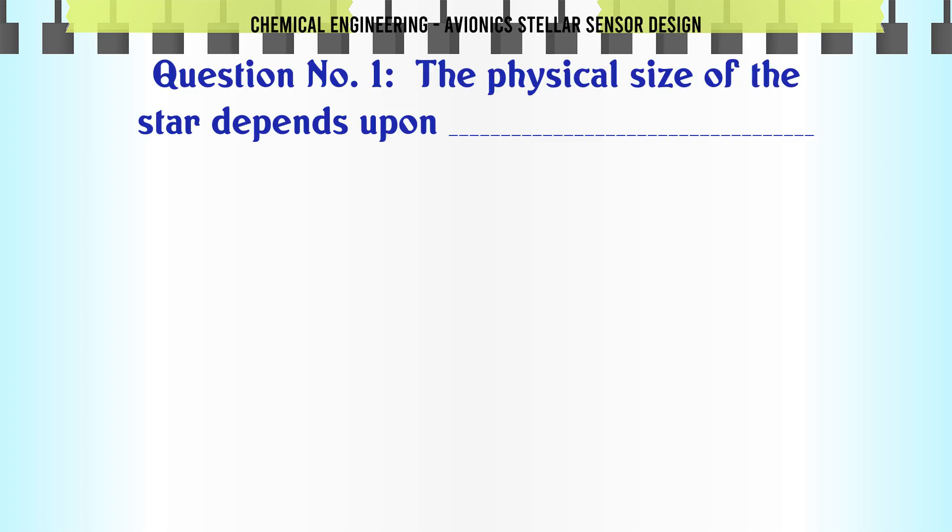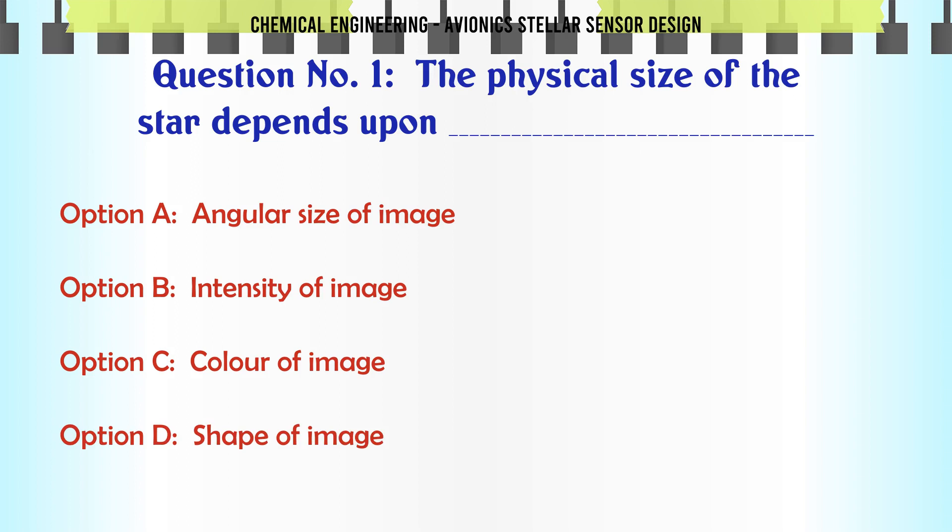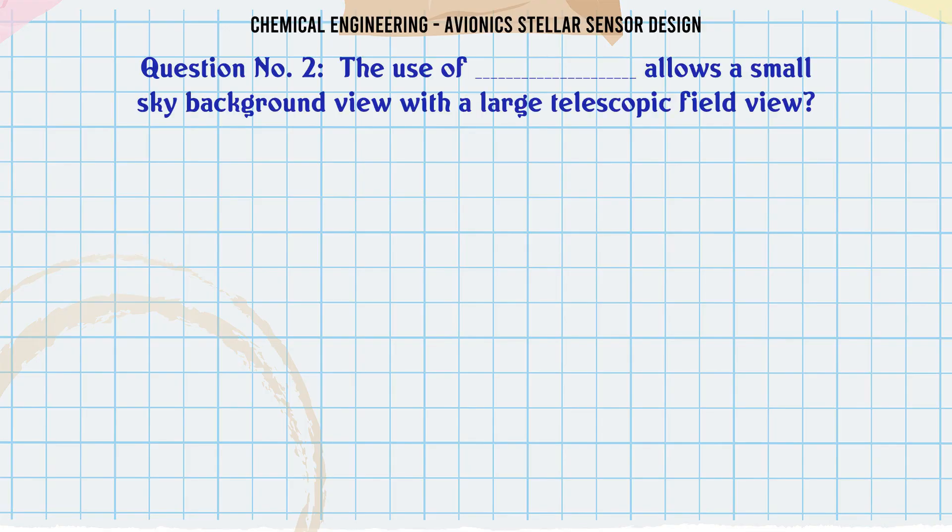The physical size of the star depends upon: A. Angular size of image, B. Intensity of image, C. Color of image, D. Shape of image. The correct answer is Angular size of image.